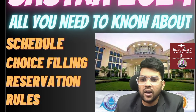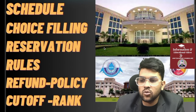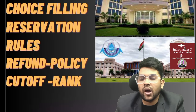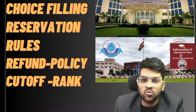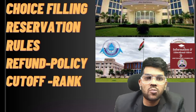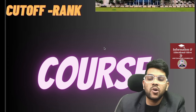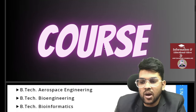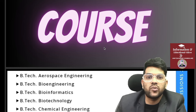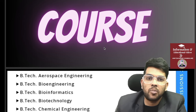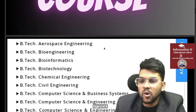You will get all you need to know about this college: the schedule — up to which date you will be able to apply, when the counseling will be done, choice filling, how to do reservation rules and refund policy, cutoff rank — everything. I'm going to provide you branch-wise expected cutoff for this year. For Stream 1 and Stream 2, what they are — that also you will know in this same video. First, let's discuss the courses available.